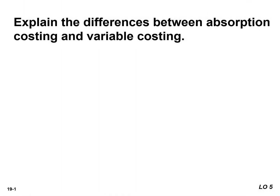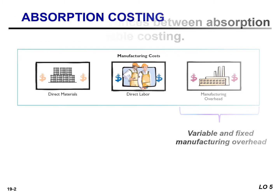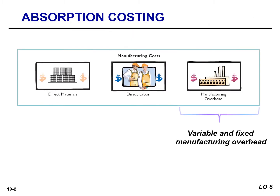In this video, we will be explaining the differences between absorption costing and variable costing. In earlier chapters, we classified both variable and fixed manufacturing cost as product cost. In job order costing, for example, a job is assigned the cost of direct materials, direct labor, and both variable and fixed manufacturing overhead. This costing approach is referred to as full or absorption costing. It is so named because all the manufacturing costs are charged to or absorbed by the product.